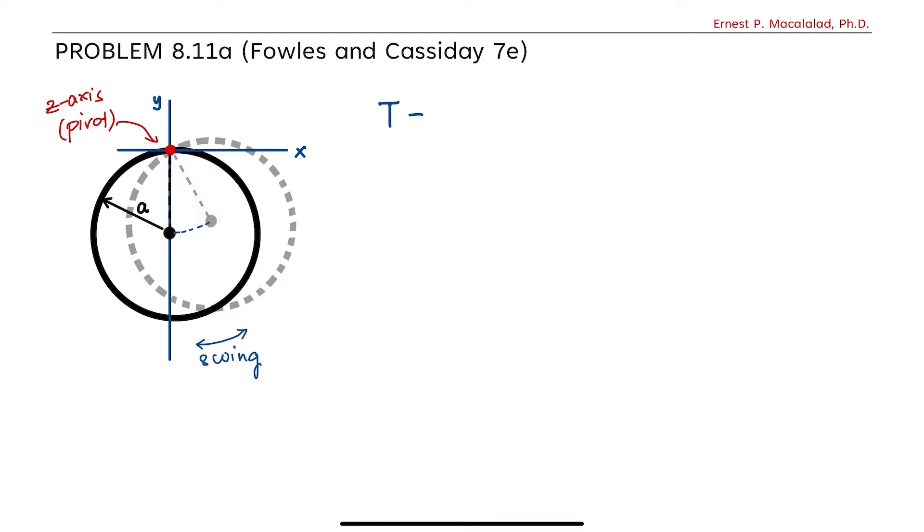We know that the period of oscillation is 2π times the square root of I over mga, where I is the moment of inertia of your object, m is the mass of your object, g is the acceleration due to gravity, and a is the location of the center of mass.